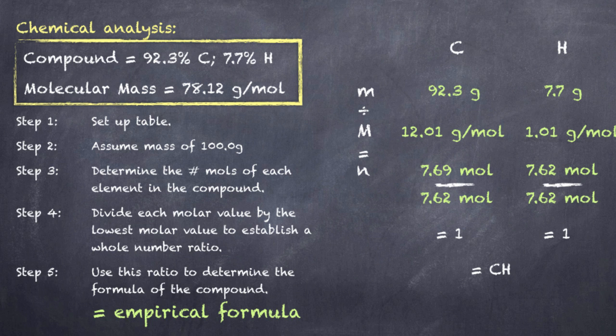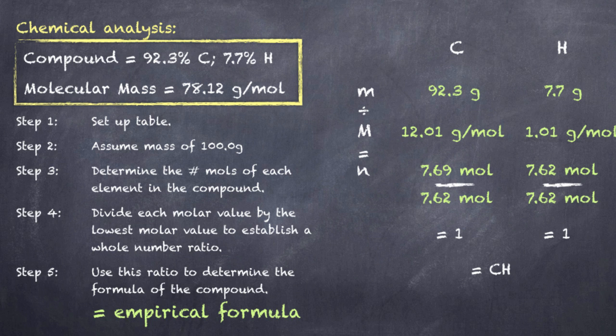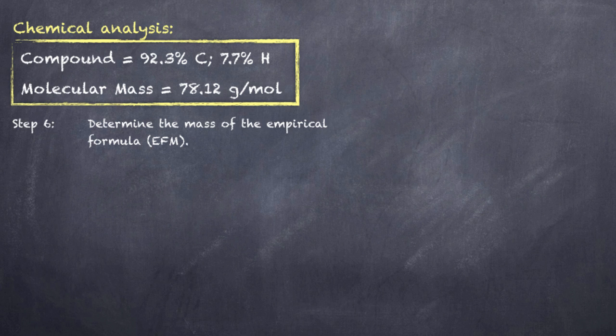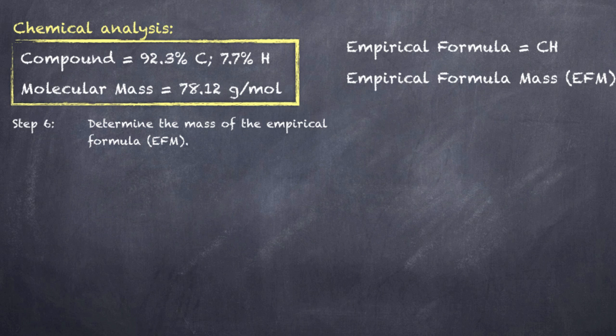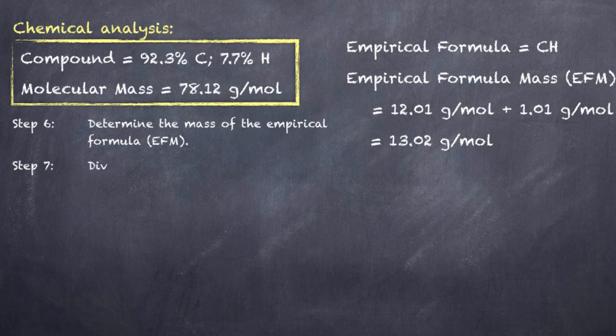You'll notice that in the chemical analysis, we were also given the molecular mass of this particular compound. So that will allow us to use the empirical formula to figure out the molecular formula, the actual molecular formula of this particular compound. So the next step then is to determine the mass of the empirical formula. And we refer to this as the empirical formula mass. And since the empirical formula is CH, it's just going to be the mass of one mole of carbon and the mass of one mole of hydrogen. And together, those two equal 13.02 grams per mole.